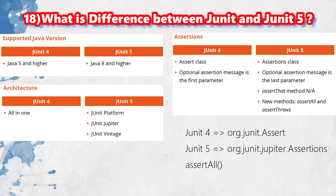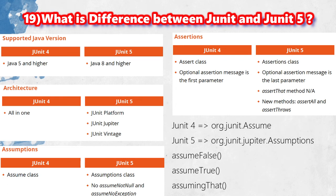If you are coming to assumptions: in JUnit 4, we use org.junit.Assume, which contains assumeFalse, assumeNotException, assumeNoException, assumeThat, and assumeTrue. In JUnit 5, we use org.junit.jupiter.api.Assumptions, which contains three methods: assumeTrue, assumeFalse, and assumingThat.